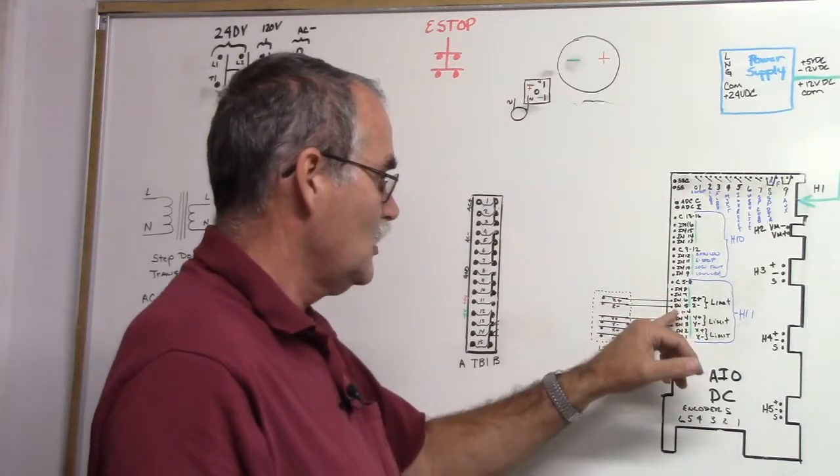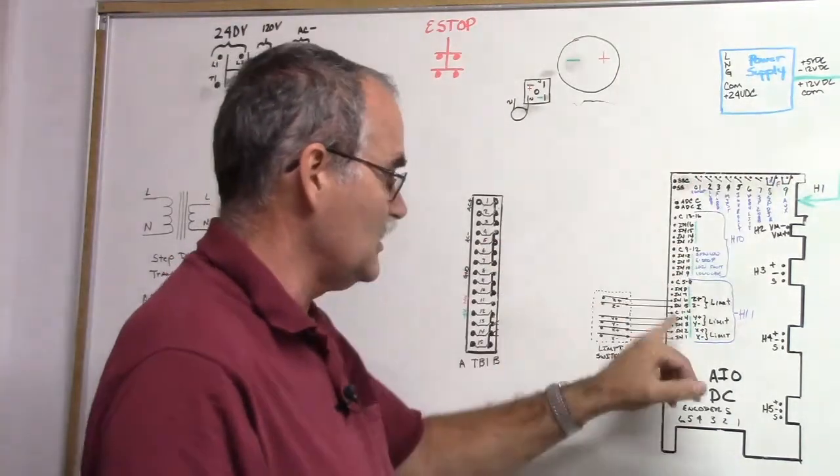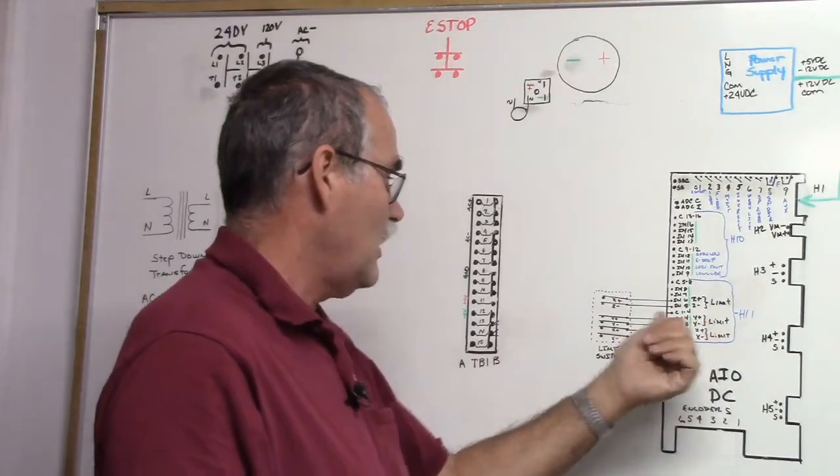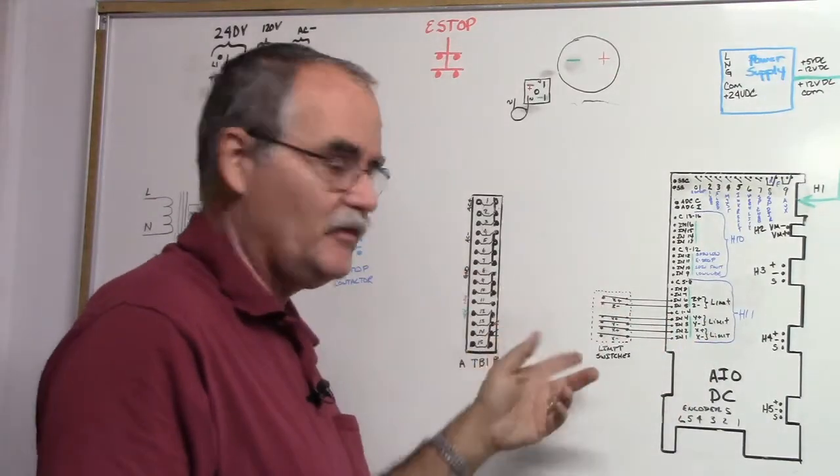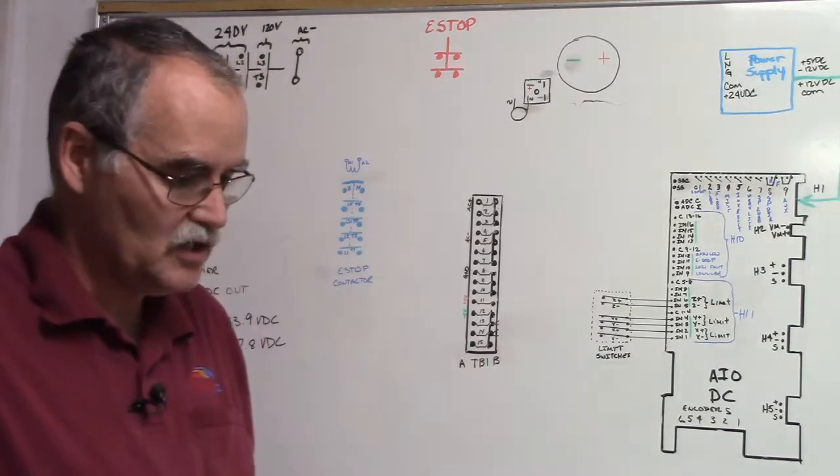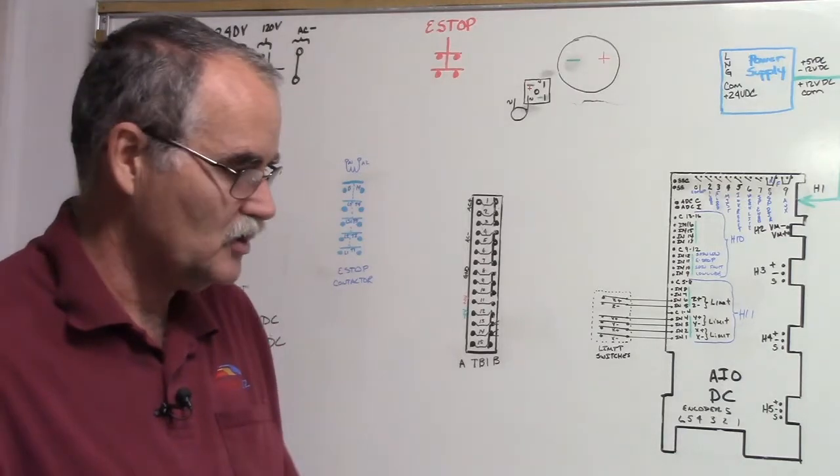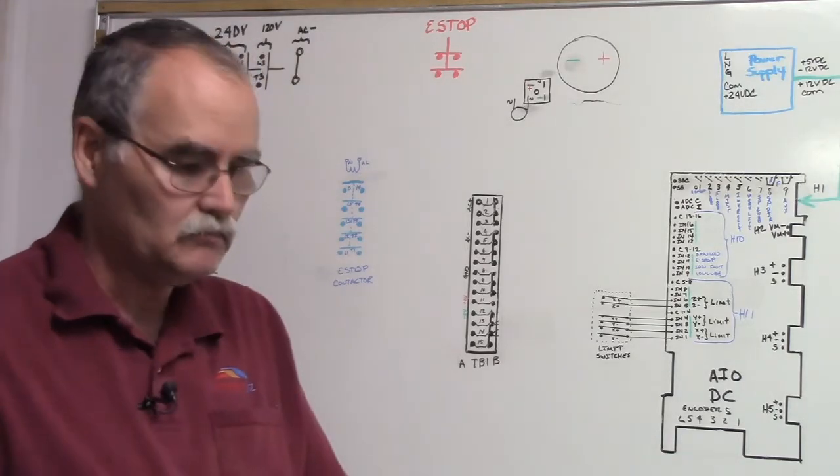That's the way I'm going to show sinking. We're going to tie these commons all to 24 volts DC, and then they're going to go out to whatever the device, here's the limit switches. So that's sourcing and sinking. It's just something that we probably should cover and talk about a little bit.